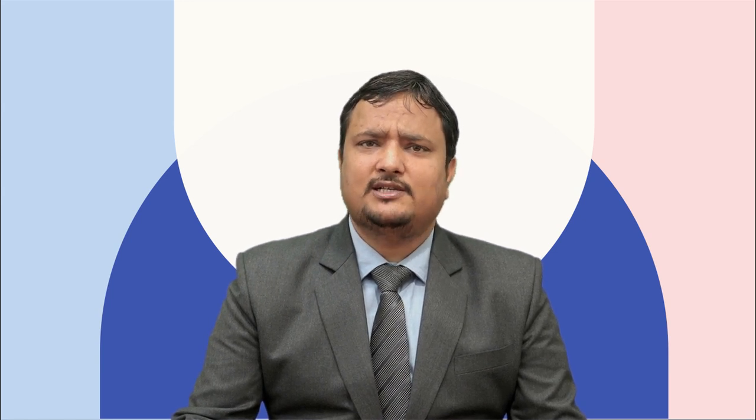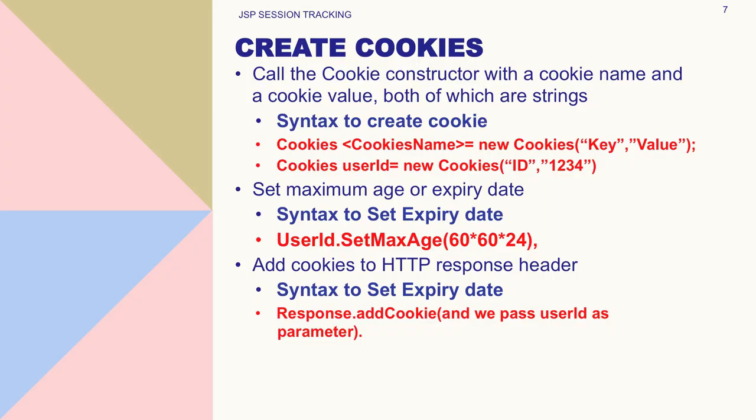To create a cookie object, we call the cookie constructor with a cookie name and a cookie value, both of which are string type. The syntax is: Cookie cookieName = new Cookie(key, value). For example, Cookie userID = new Cookie("ID", "1234").